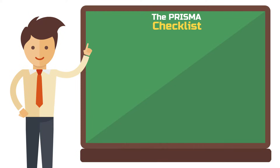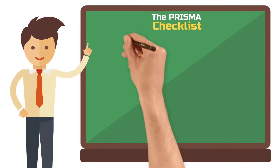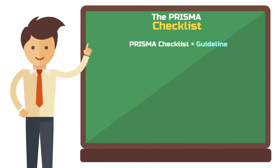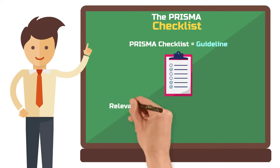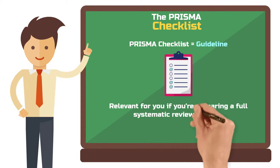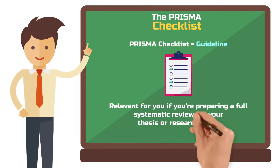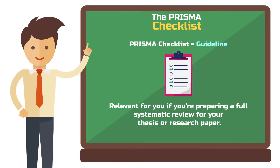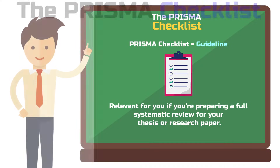In addition, PRISMA offers further resources such as a checklist which you can find on the PRISMA website. It consists of 27 items that are divided into different sections. This checklist is relevant for you if you are preparing a full systematic review as part of your thesis or research paper.